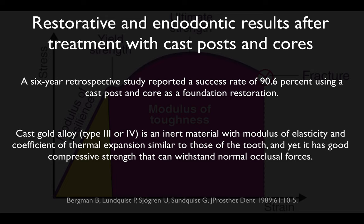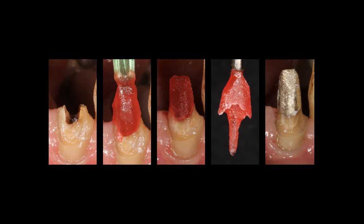Bergman, looking at a six-year retrospective study, reported a success rate of 90% using cast posts and cores. He noted that type 3 or type 4 gold alloy has a modulus of elasticity and coefficient of thermal expansion similar to that of the tooth, and also has good compressive strength, making it a good choice for cast posts and cores. Here's a pictorial of how I do it: we use a carrying mechanism with GC pattern resin to adapt to the post space, create the core, prep the core, remove it, invest it, cast it, and cement it.